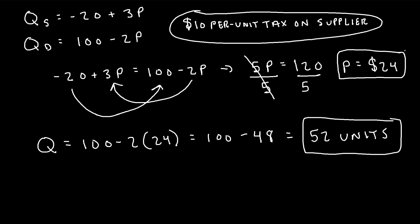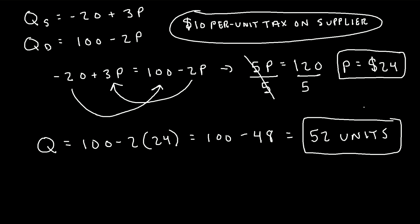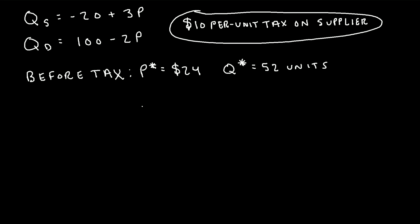So we've found the market equilibrium price and quantity before the tax is imposed. Before the tax, the equilibrium price p* was $24, and the equilibrium quantity q* was 52 units. Now let's find the market equilibrium price and quantity after the tax, where a $10 per unit tax is imposed on the supplier.